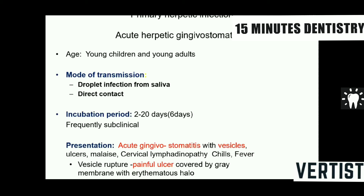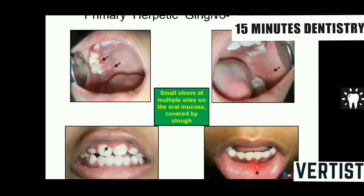Primary herpetic infection is called acute herpetic gingivostomatitis. It is characterized by gingivitis and stomatitis along with the presentation of vesicles and ulcers. The cells rupture and have an erythematous halo, and the lesions heal by themselves without any scarring.